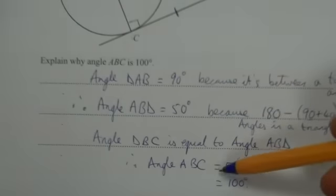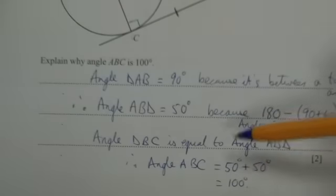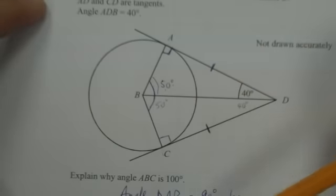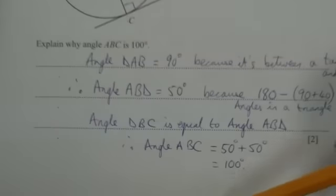If the explanation is partial but not full, you're going to get a method mark. For example, if you knew the 50, but if you've got the full explanation, you're going to get the two marks.